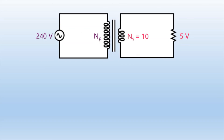For example, this question shows a circuit diagram of a transformer in a mobile phone charger. The question asks us to calculate the number of turns in the primary coil, or Np. First, let us identify all the known values. 240V is the input voltage, or Vp. 5V is the output voltage, or Vs. Then we put all those figures into the formula: Vp over Vs equals Np over Ns.